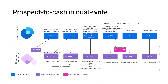Prospect-to-Cash is a functional workflow that consists of dual-write solutions and features to integrate seamlessly data and processes across Dynamics 365 Supply Chain Management and Dynamics 365 Sales. In this diagram, we have illustrated the objects typically mapped as part of this integration.